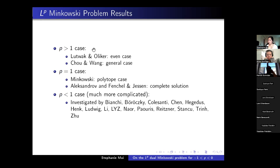Here is the progress on the LP Minkowski problem. When P > 1, Lutwak and Oliker first solved the even case, then Chou and Wang solved the general case using PDEs. When P = 1, we've discussed this already. When P < 1, things get more complicated and interesting, since the log Minkowski and central affine cases are included in this region. Several people have investigated this, and I've listed some names here.